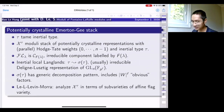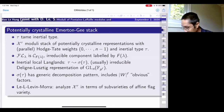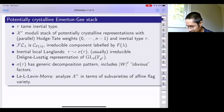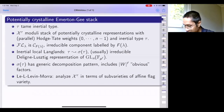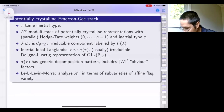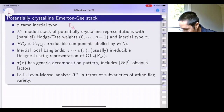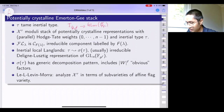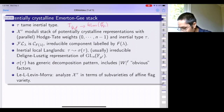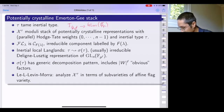That deals with the description of the moduli of Fontaine-Laffaille modules and its stratification. To relate this to global information like modular Serre weights, I have to study how FL_lambda interacts with various tame types. Let me fix a tame inertial type, which is a representation of inertia that can be extended to the Weil group and has finite image. Given such data, I have a moduli stack of potentially crystalline representations with Hodge-Tate weights 0 and minus 1 on each embedding, with inertial type tau.